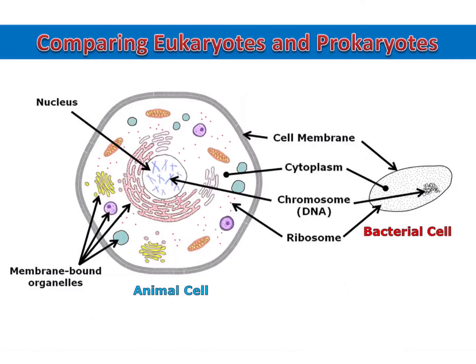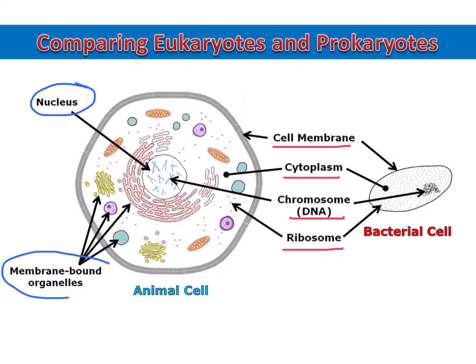The cells of both eukaryotes and prokaryotes are surrounded by a cell membrane and full of cytoplasm. They also contain DNA and all cells have ribosomes for protein synthesis. But only eukaryotes have a nucleus and other membrane-bound organelles. You'll notice that this makes eukaryotic cells much larger and more complex.